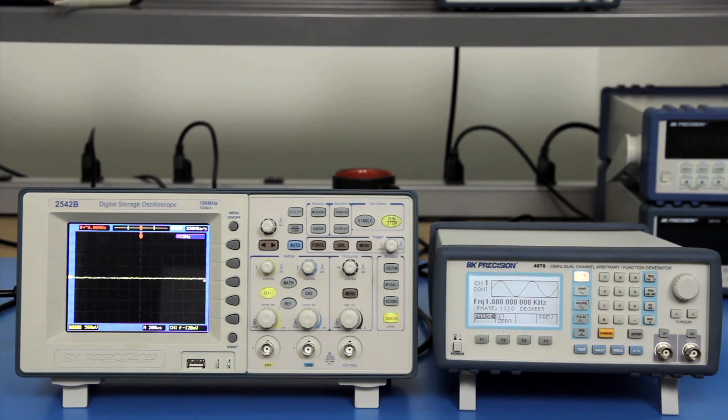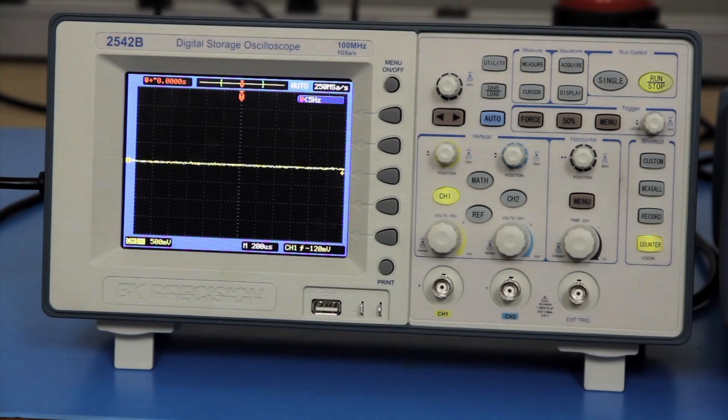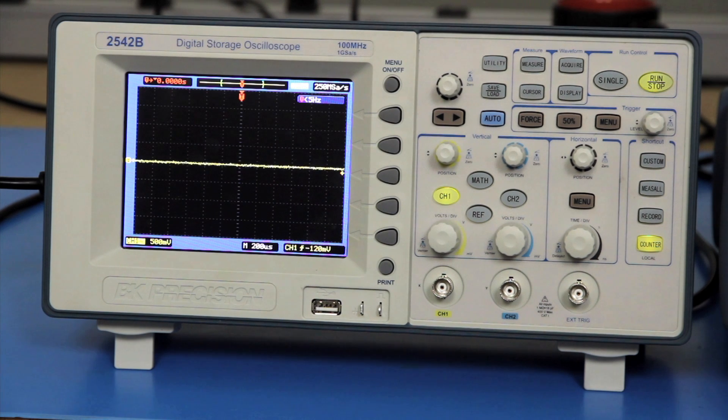For demonstration, I will use a BNK Precision 4078 Dual Channel Arbitrary Waveform Generator to generate the signals for phase measurement using a BNK Precision 2542B digital storage oscilloscope.